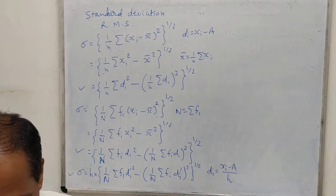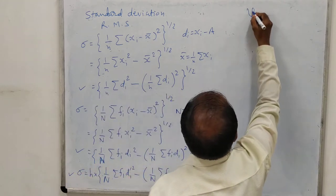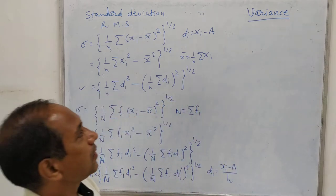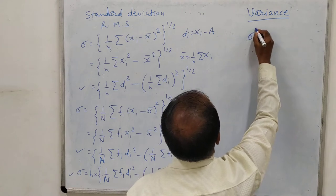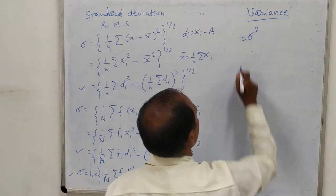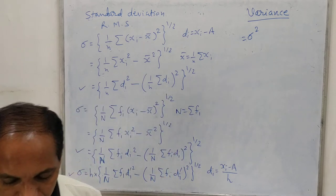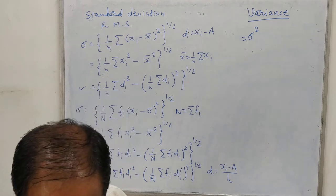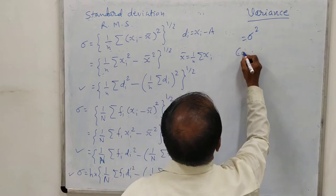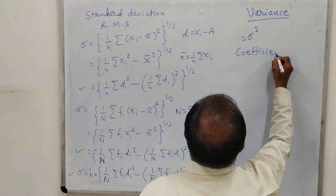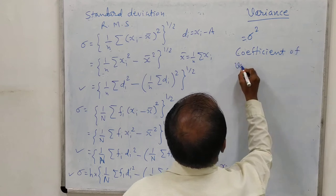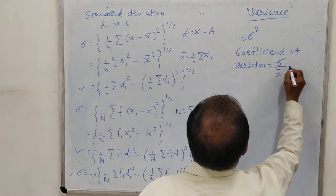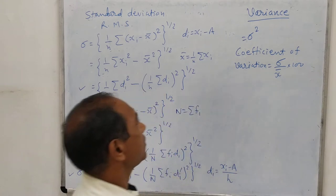Now let us see variance. Variance is nothing but the square of standard deviation — that means sigma square is known as variance. Then, coefficient of variation is obtained as sigma upon x-bar, into 100 — that means we obtain this in percentage form. Coefficient of variation is useful to compare two data sets.